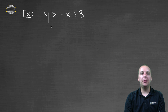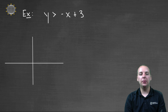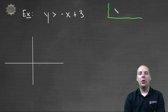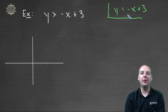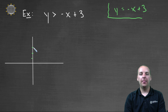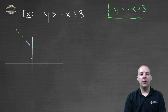Let's try an example: find all solutions to y is strictly greater than negative x plus three. First, we'll graph y equals negative x plus three. This has a y-intercept of three, and a slope of negative one, which means it goes down one and over one. You get roughly a forty-five degree line. This line should be dotted to indicate that this is a strict inequality.